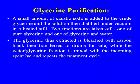In glycerin purification, a small amount of caustic soda is added to the crude glycerin and the solution is distilled under vacuum in a heated still. Two fractions are taken: one of pure glycerin and one of glycerin and water. The glycerin is then bleached with activated carbon and transferred for packaging, while the water-glycerin fraction is mixed with the incoming spent lye and the treatment cycle is repeated.